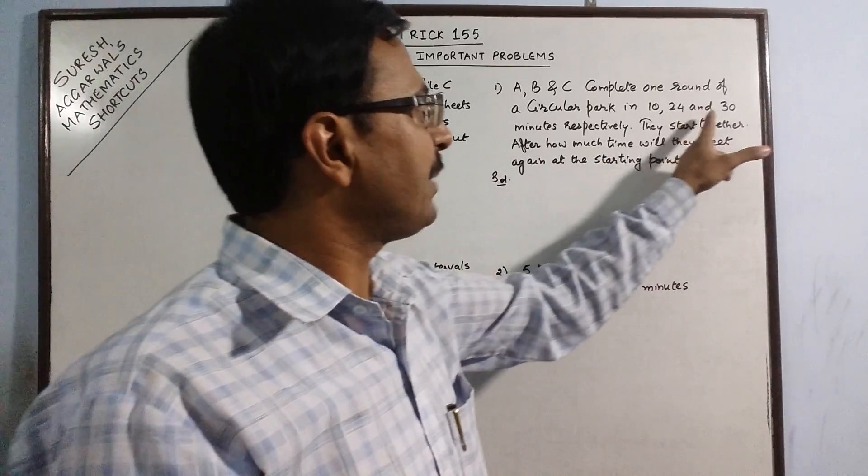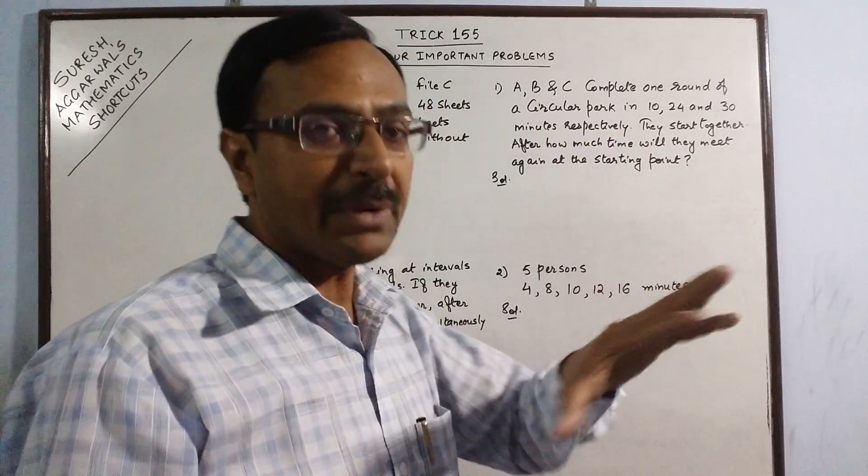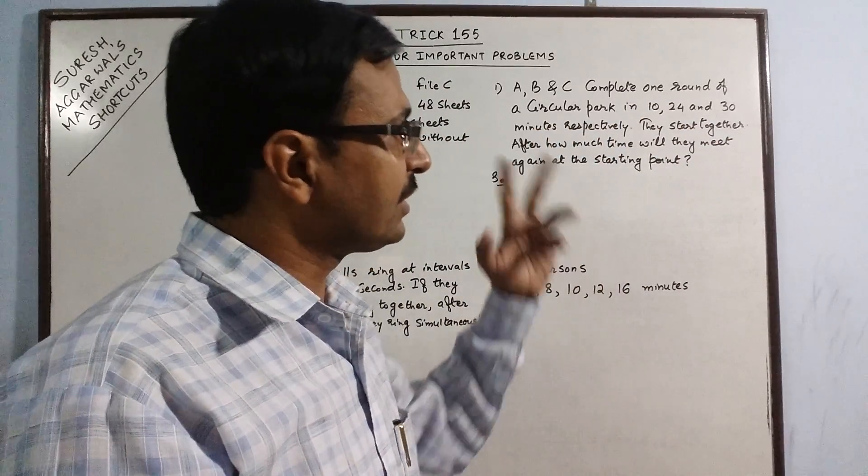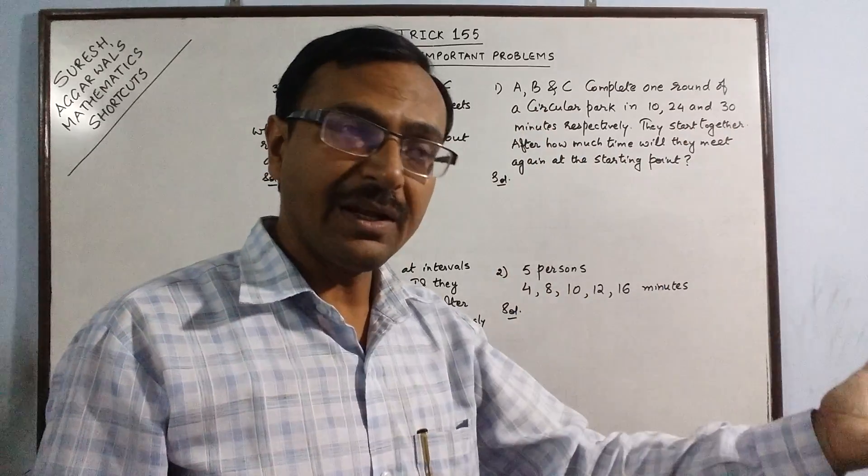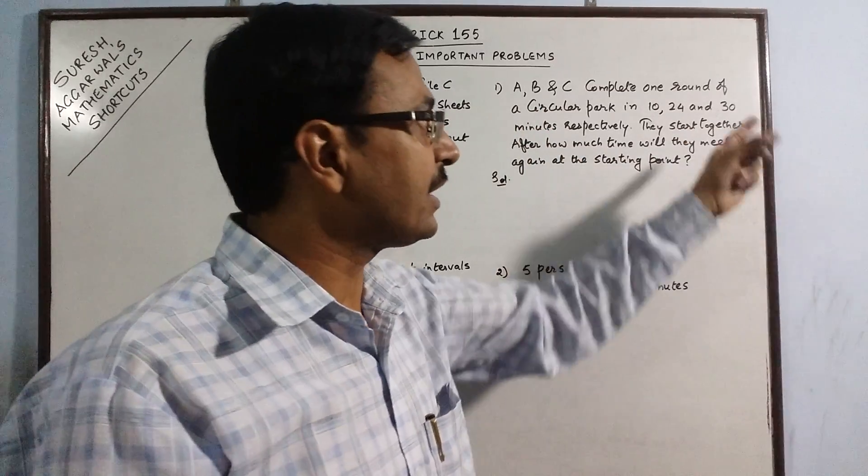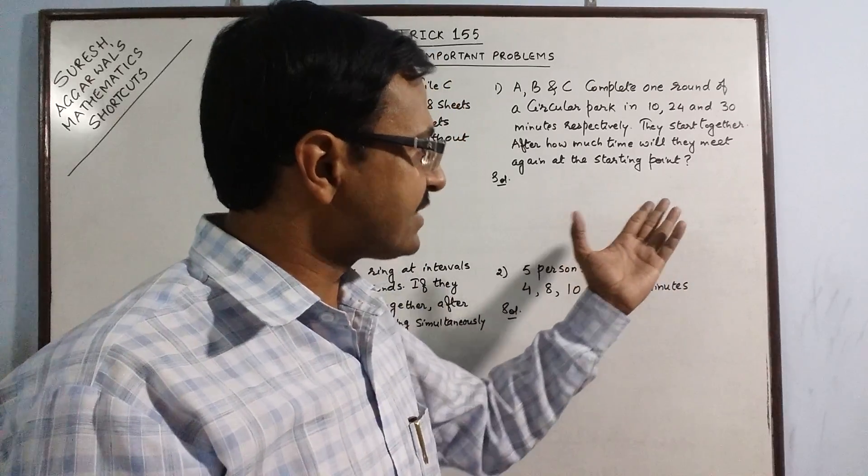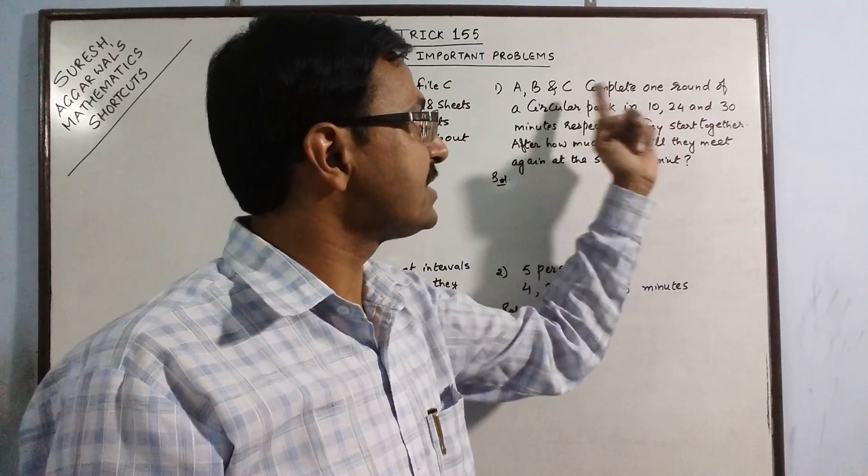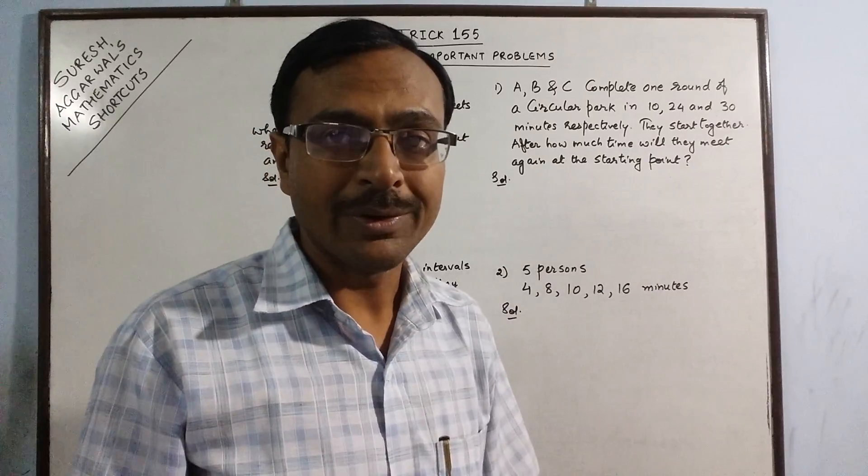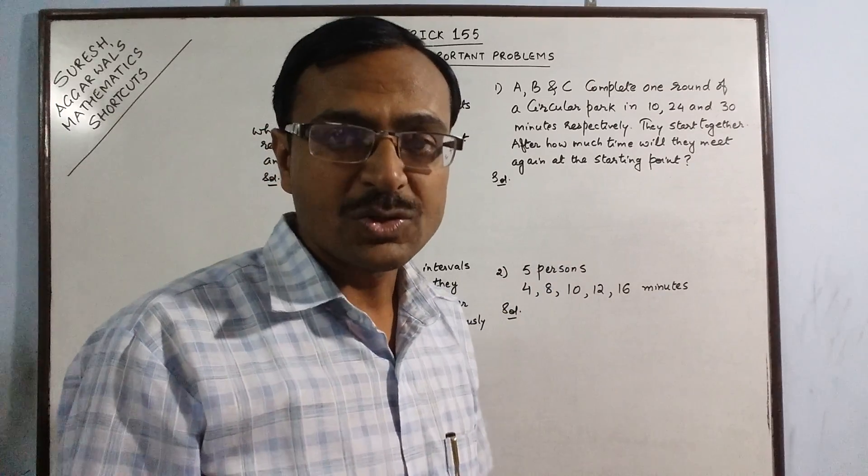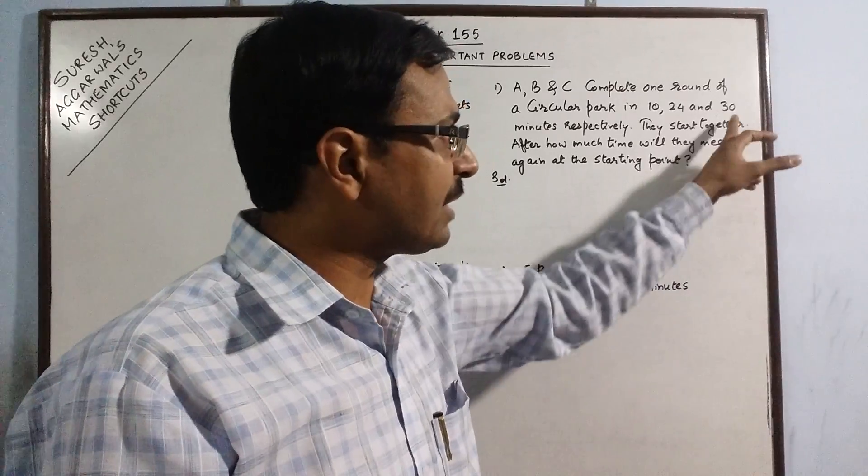The maximum time taken is 30 minutes to complete one round. Obviously when the three persons meet again, the time has to be greater than 30. It cannot be less than 30 because in less than 30 minutes, person C will not complete even one round. So he cannot meet at the starting point again.